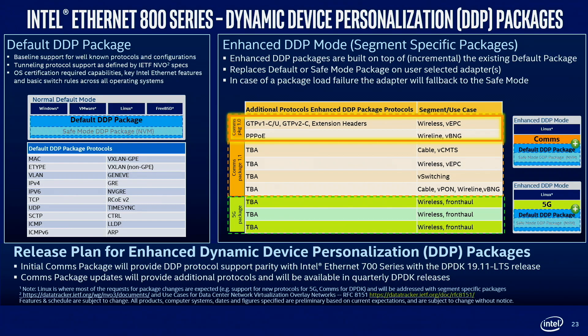Those aren't necessarily changing much and we can handle that. But we'll have the ability to load a different package at runtime with additional protocols — referring to these as the enhanced DDP package or segment-specific packages. The first one, available in the DPDK 19.11 release, will add GTP and PPPoE. These are the first two protocols we added with DDP on the 700 series, so we're achieving parity with those initial protocols, then additional releases will add more capabilities. Yes, we do have a lot of mobile providers pushing for this technology, to fill out all those different virtual environments that used to be appliances.